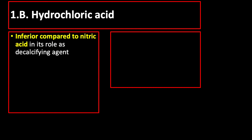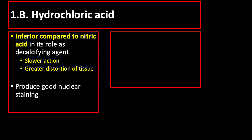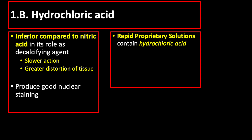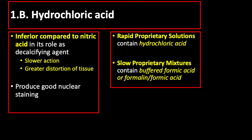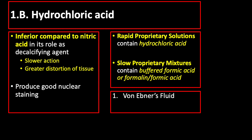The next strong acid is hydrochloric acid, which is inferior compared to nitric acid in its role as a decalcifying agent because of its slower action and greater distortion of tissue produced on the decalcified section. Nevertheless, hydrochloric acid produces good nuclear staining. There are also proprietary or commercially available decalcifying solutions sold in the market. Rapid proprietary solutions contain hydrochloric acid while slow proprietary mixtures contain buffered formic acid or formalin formic acid.